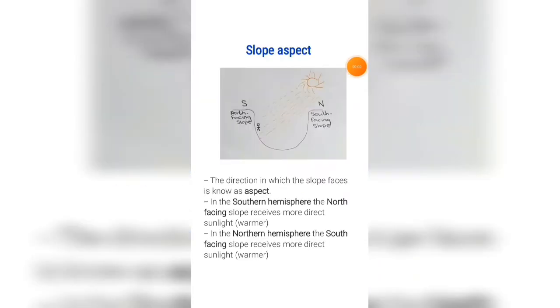The direction in which the slope is facing is known as aspect. In the southern hemisphere, the north-facing slope receives more direct sunlight, therefore making it warmer.